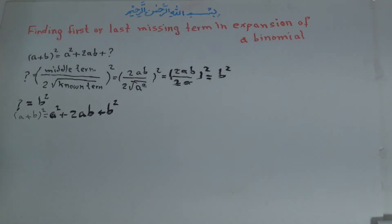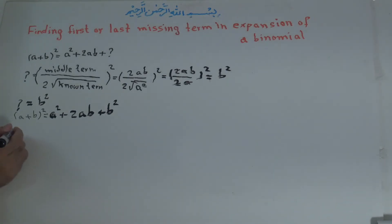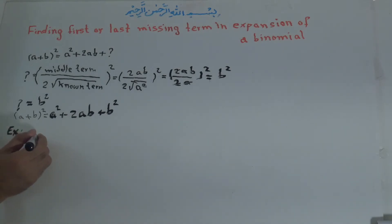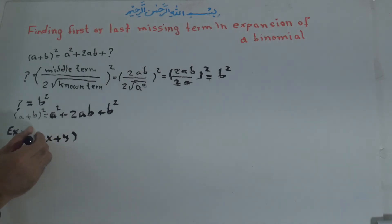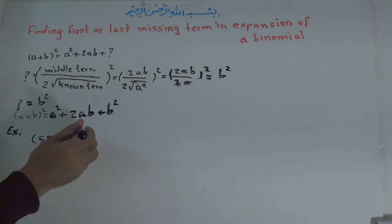Now I will solve an example for you. Example: 5x plus y to the power of 2 is equal to 25x to the power of 2 plus question mark.